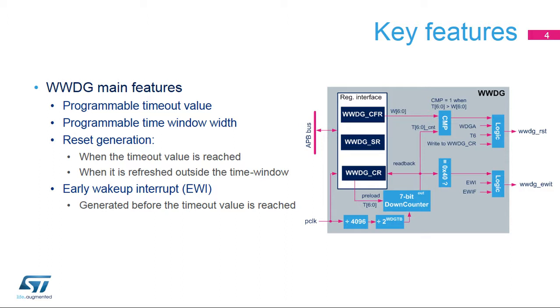As shown in the figure, the Window Watchdog uses the APB clock, or PCLK, as reference clock for its time base. The PCLK is provided by the RCC block.